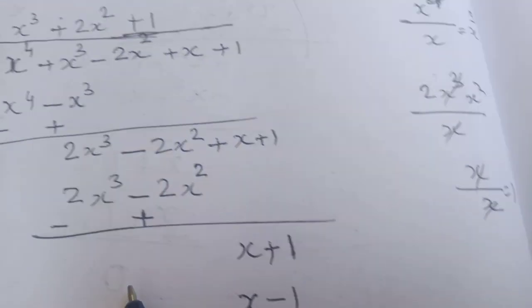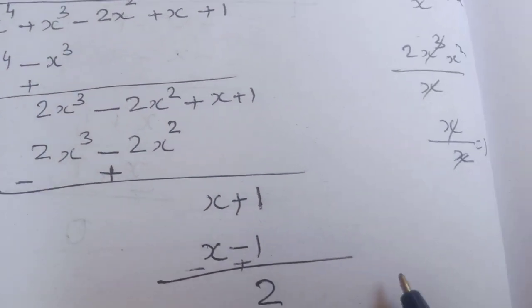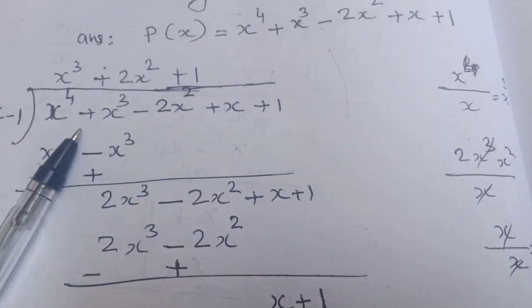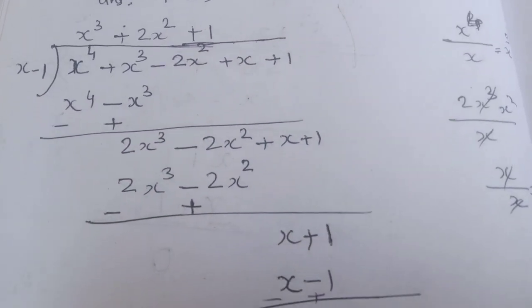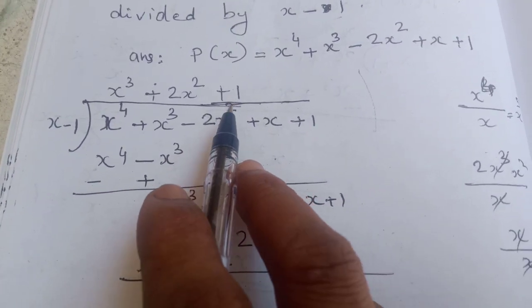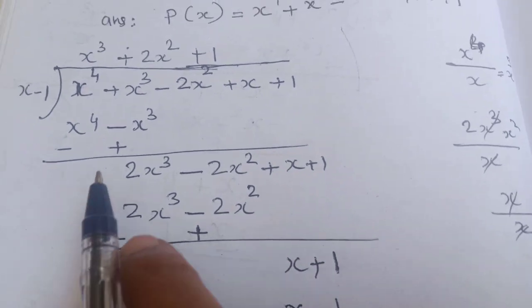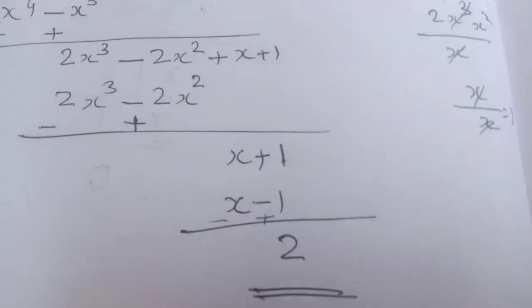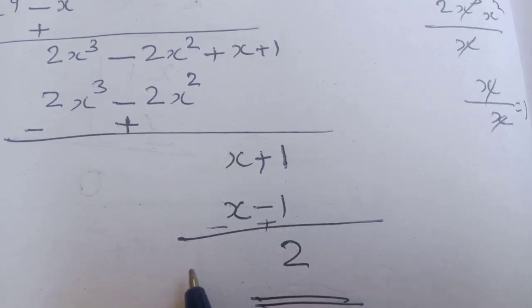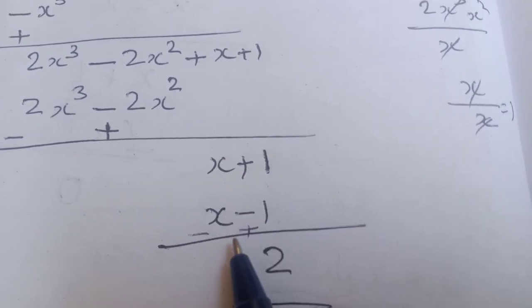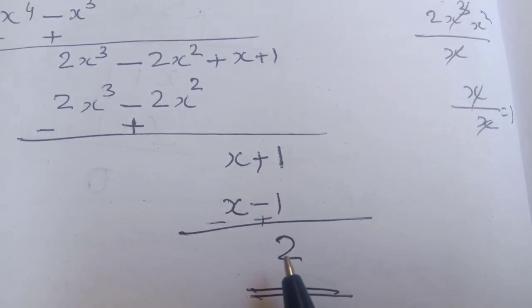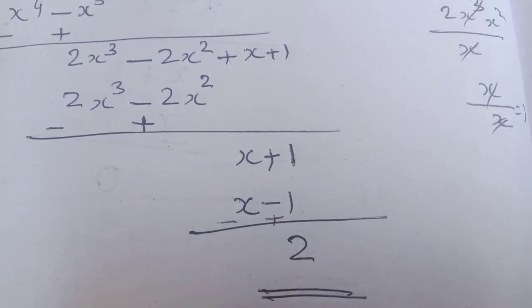Put +1 in the quotient. Multiply: 1 into x gives x, and 1 into −1 gives −1. Change the sign — minus becomes plus — so x cuts, and we are left with +1 and +1, which gives 2. The remainder is 2.